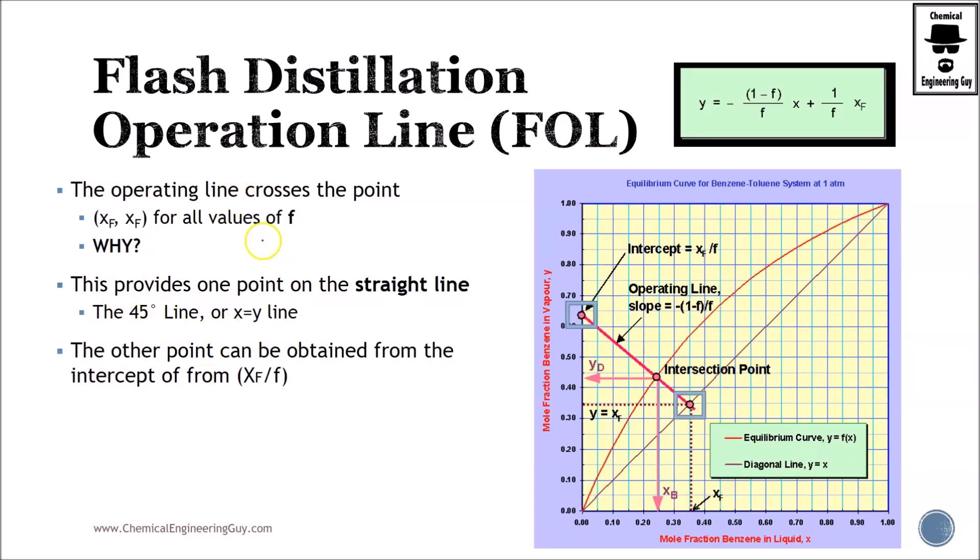Okay, so let's make a little bit of questions. The operation line crosses the point xf, xf for all values of f. The important question is why, guys. I already told you a little bit, so try to guess it for yourself. This provides one point on the straight line. I stated before, guys, this point is always valuable. If you have xf, you will be able to identify this point always.